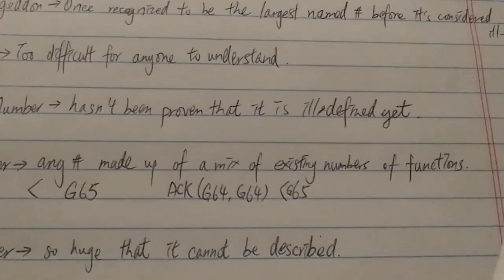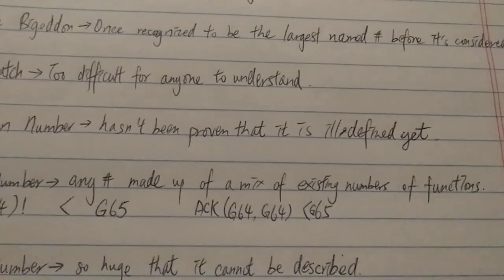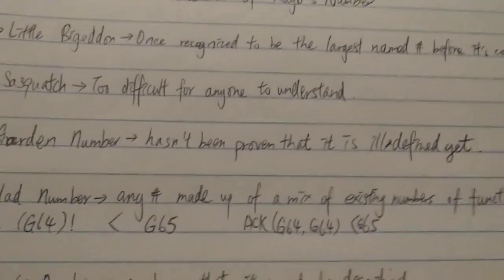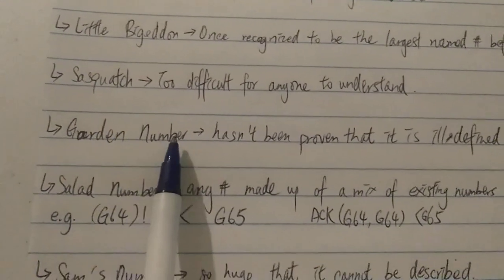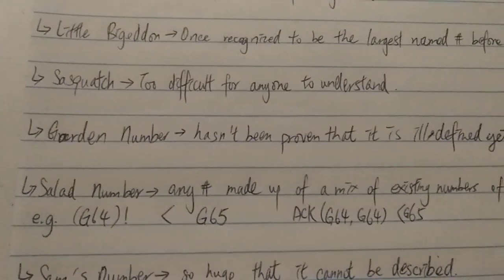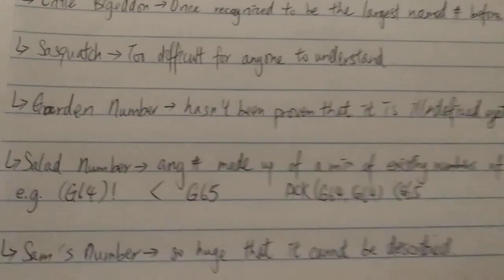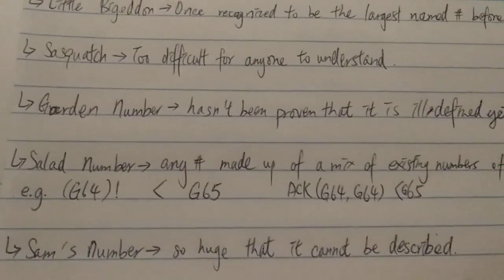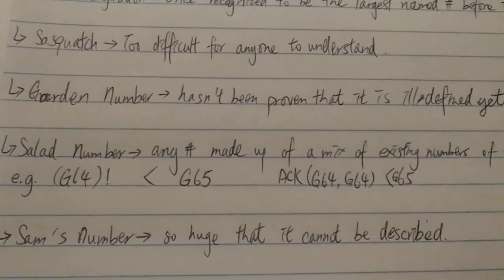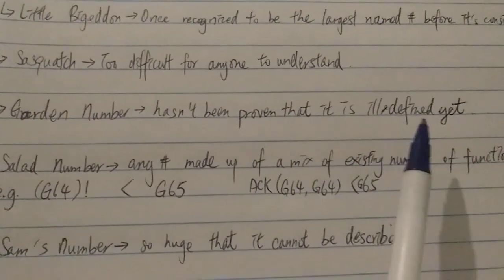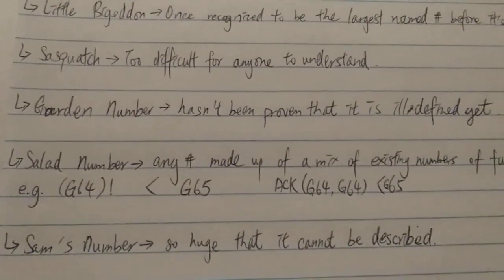So who knows? Maybe later it was found to be ill-defined and it can be dethroned. So this is your answer. Garden's Number is currently the biggest number. You can look it up yourself. Again, I cannot tell you how big it actually is. The only reason it is the largest named number right now is because it hasn't been proven otherwise.